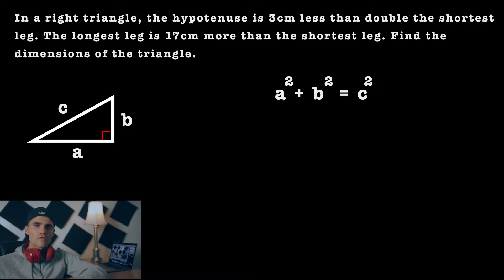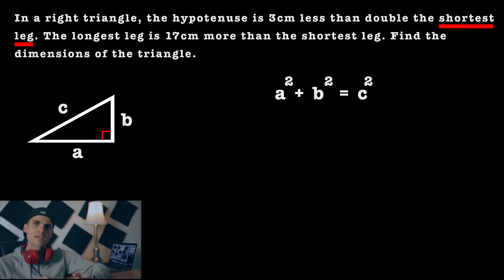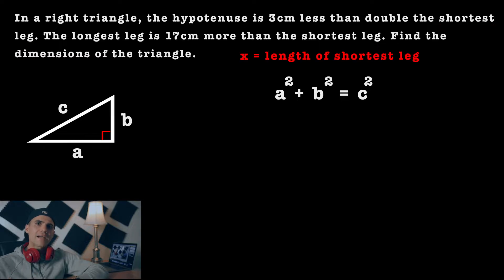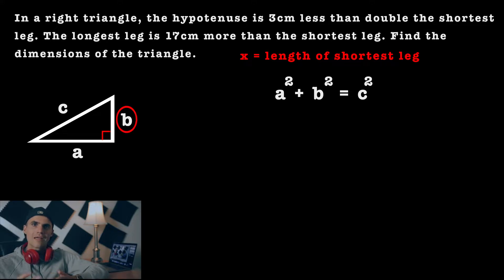If you read the paragraph carefully, you'll notice that the hypotenuse is described in terms of the shortest leg, and the longest leg is also described in terms of the shortest leg. Because the shortest leg is the common variable between the two descriptions, let's introduce a variable and let x equal the length of the shortest leg. In the diagram, the shortest leg is the b value, so we'll let that side be x.